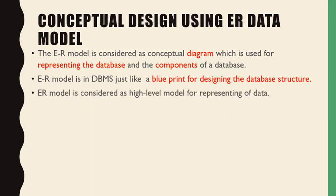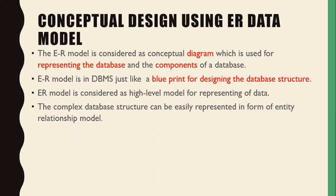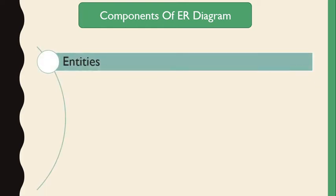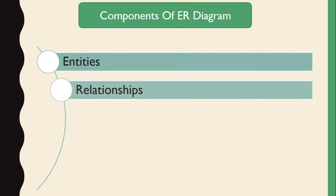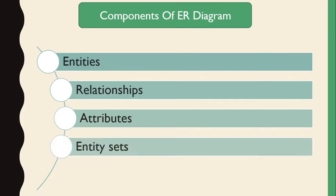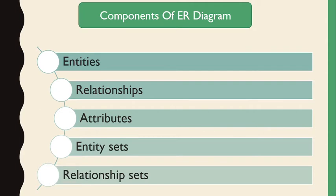The ER model is considered a high-level model for representing data. Complex data structures can be easily represented in the form of an entity-relationship model. The components of ER diagrams are entities, relationships, attributes, entity sets, and relationship sets. We will discuss these components in detail in today's lecture.